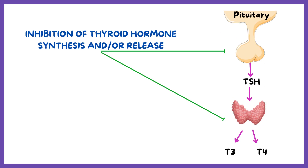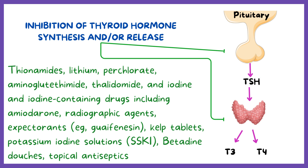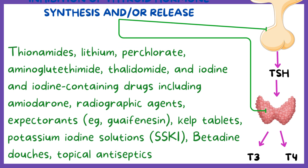The first mechanism is the inhibition of thyroid hormone synthesis and/or release. Medicines such as thionamides, lithium, perchlorate, aminoglutethimide, thalidomide, and iodine and iodine-containing drugs — including amiodarone, radiographic agents, expectorants (for example, guaifenesin), kelp tablets, potassium iodine solutions, betadine douches, and topical antiseptics — can inhibit thyroid hormone synthesis and/or release.